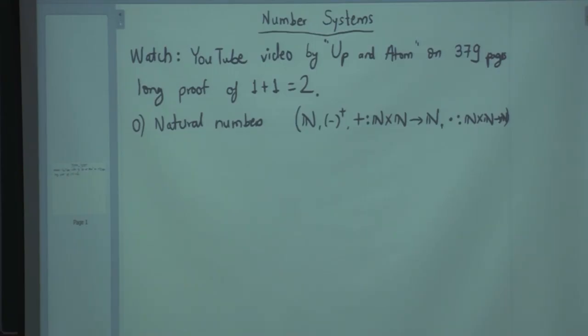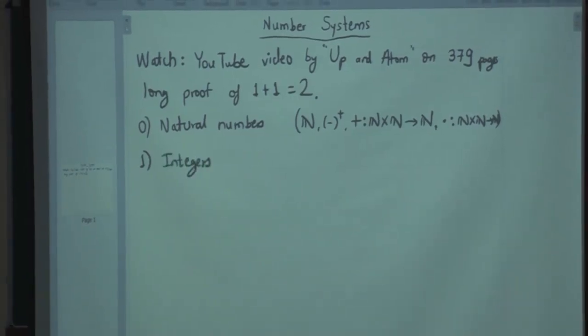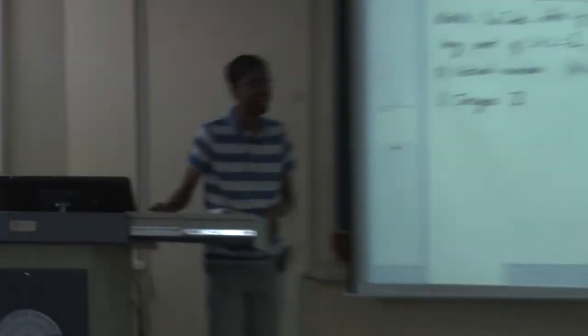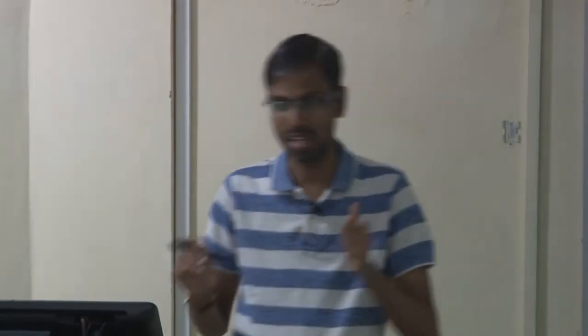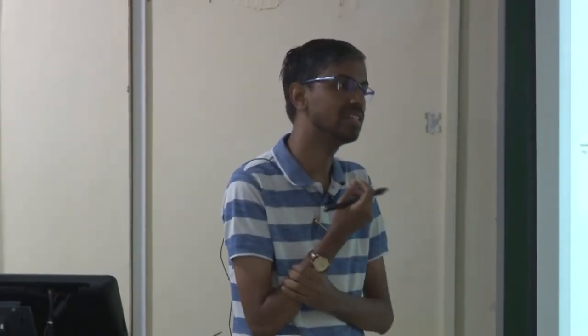Now we want to extend to stage 1: integers. In natural numbers, subtraction is only partially defined. You can subtract 2 from 3 but you cannot subtract 3 from 2 — it is a restricted operation. So we want to allow ourselves to have negative integers and subtraction. Any ideas on how to achieve this from natural numbers?